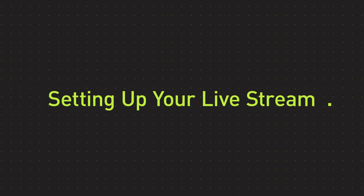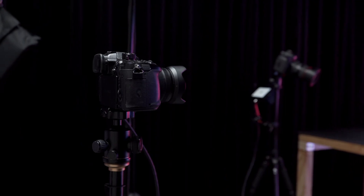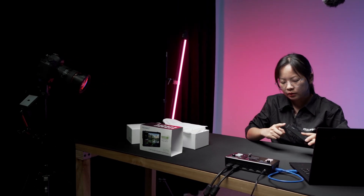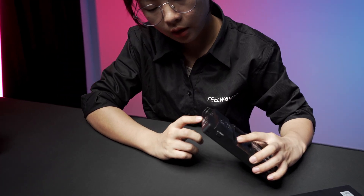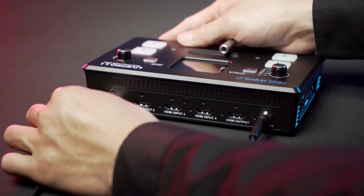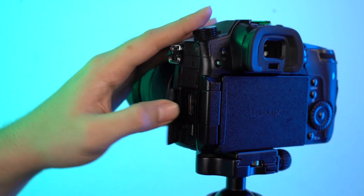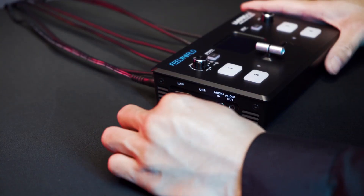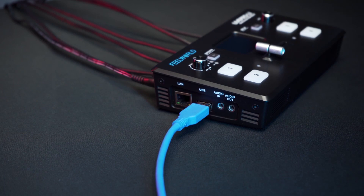Setting up your live stream: The actual live stream setup is quite simple once you have all the equipment. First, let's set up the camera positions. Here we set up two camera positions — one right in front of me and one to show the product for better viewing details. Then connect the cameras to the switcher with an HDMI cable, and connect the switcher to the computer with a USB cable.